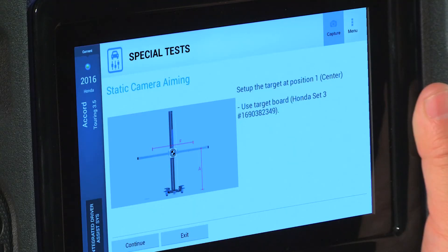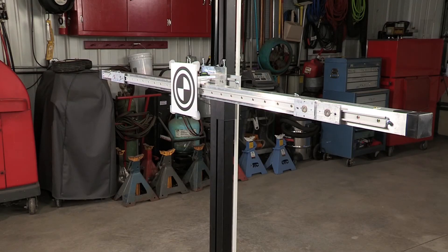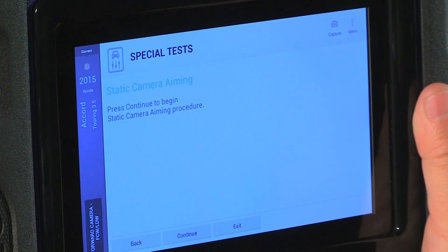We are going to use the scan tool to calibrate the camera. With the target in the center position, you are ready to start the calibration and press continue.